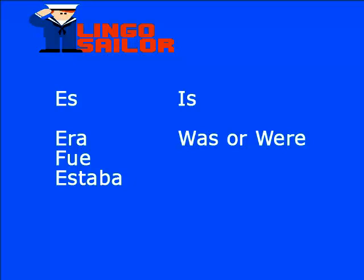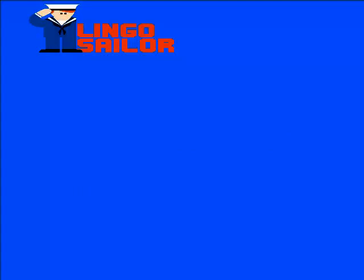Viajemos ahora al pasado. Sabemos que palabras como 'era', 'fue' o 'estaba' son formas verbales del pasado en español. El pasado de 'es' en inglés, que es 'is', sería 'era', 'fue' o 'estaba' dependiendo del contexto. En inglés, 'era' o 'fue' sería 'was' o 'were'. Was y were son el tiempo pasado del verbo 'to be'.